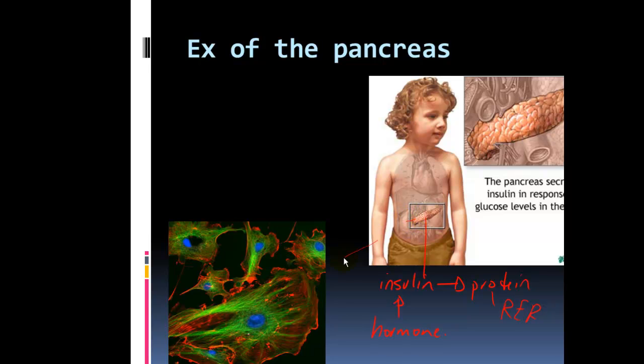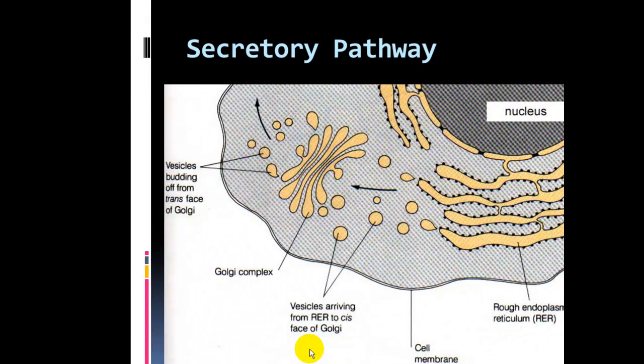So if we look, if we blew up the pancreas, and we look at the cells of the pancreas, the cells of the pancreas are what make and export insulin into the bloodstream. And then the insulin travels around the body to keep our blood sugar levels constant, to maintain homeostasis. So the making of insulin happens at a cellular level. And specifically, it happens at the RER, blebbed into a vesicle, which then moves to the Golgi, blebbed into another vesicle, moving to the cell membrane. And then the insulin moves out of the pancreatic cell into our bloodstream to be transported around the body.